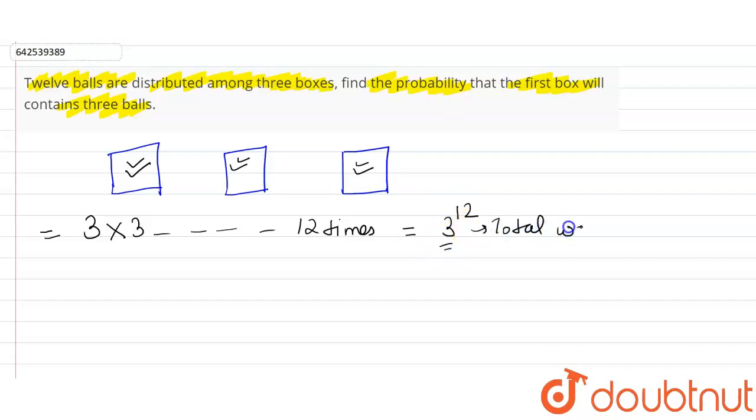Total ways. Now favorable ways is that the first box should contain 3 balls. So we have to select 3 balls from 12 balls and arrange it only in first box, that is 1.